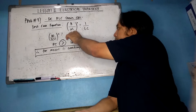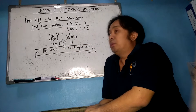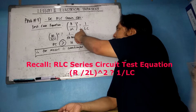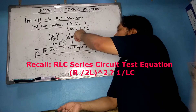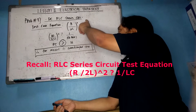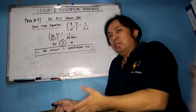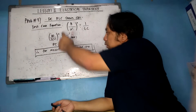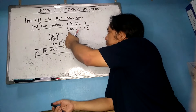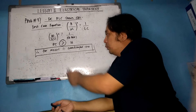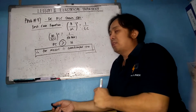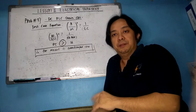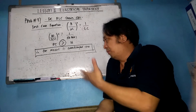For a DC RLC series circuit, we recall the test: compare (R/2L)² with 1/LC. Substituting: (10 / (2×1))² = 5² = 25, and 1 / (1 × 0.0625) = 16. Since 25 > 16, the circuit is an overdamped case. The circuit is clearly not undamped because resistance is not zero.